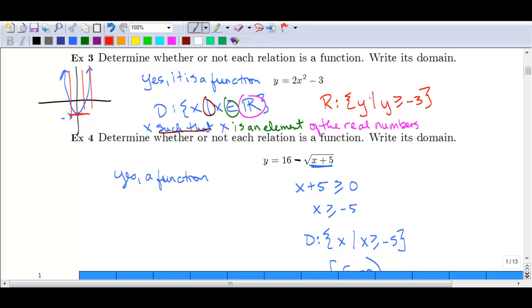Likewise, if we were looking at the range for the previous example, we would have starting with negative 3 with a bracket and going to infinity. Very similar.